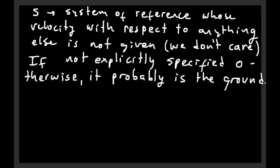For example, in a problem where you have two cars on the highway going at different speeds — car A at 40 miles per hour, car B at 80 miles per hour — and the question is what's the velocity of car A with respect to car B, it seems like there are only two objects. The third object is clearly the ground. When they say 40 or 80 miles per hour, that velocity is measured with respect to the ground. So the ground is, most of the time, going to be the system S in your problem.